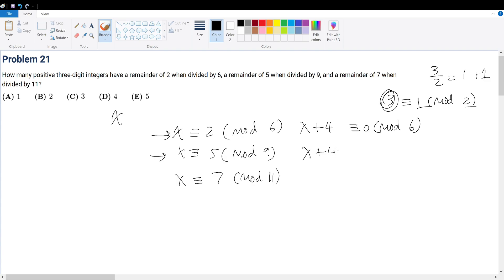So x plus 4 is congruent to 0 mod 9, right? And we can also say that x plus 4 is congruent to 0 when it's mod 11. So notice that they're all congruent to 0, right? And we have x plus 4 with 6, 9, 11. So that means it must be the multiple of 6, 9, and 11, right?